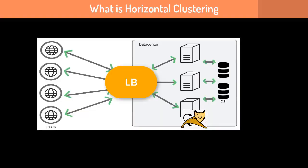The next important question: what is horizontal clustering? It is a form of clustering where you add two or more servers, and these physical servers are identical, having the same application deployed across all the machines.